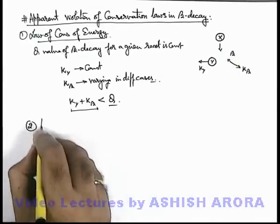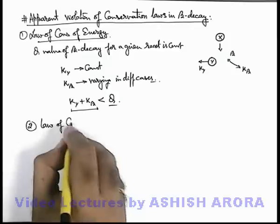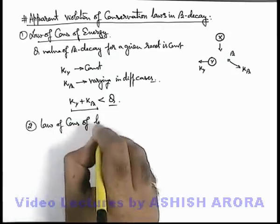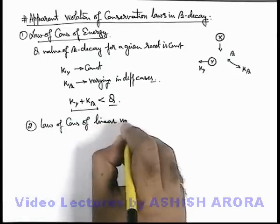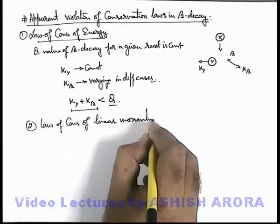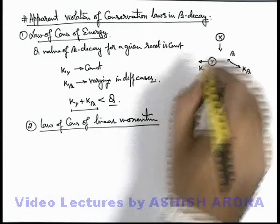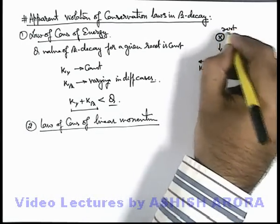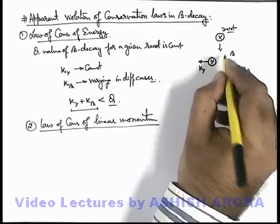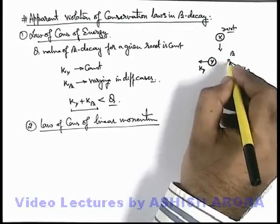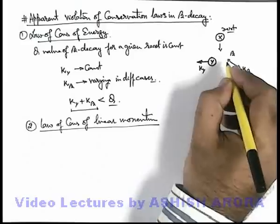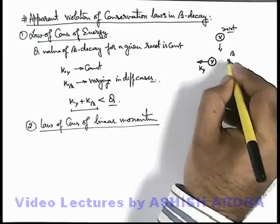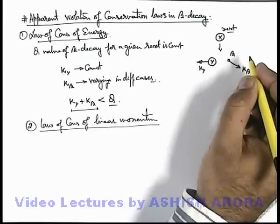The second law was the law of conservation of linear momentum. About which, with this figure which I have drawn you can see, if this nucleus X was at rest on decaying into Y and beta, if Y is moving in a direction and if no other particle is emitted, this beta must move in the direction opposite to it.